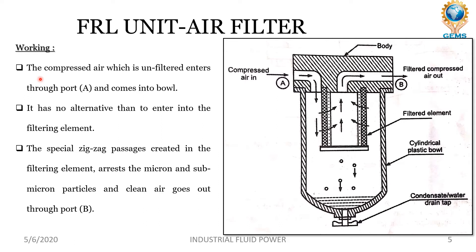Now let's see how the air filter works. The compressed air which is unfiltered enters through port A and comes into the bowl. It has no alternative than to enter into the filtering element, because only one outgoing flow is there. So it must flow through this filtering element. The special zigzag passage created in the filtering element arrests the micron and submicron particles and the clean air goes out through port B.